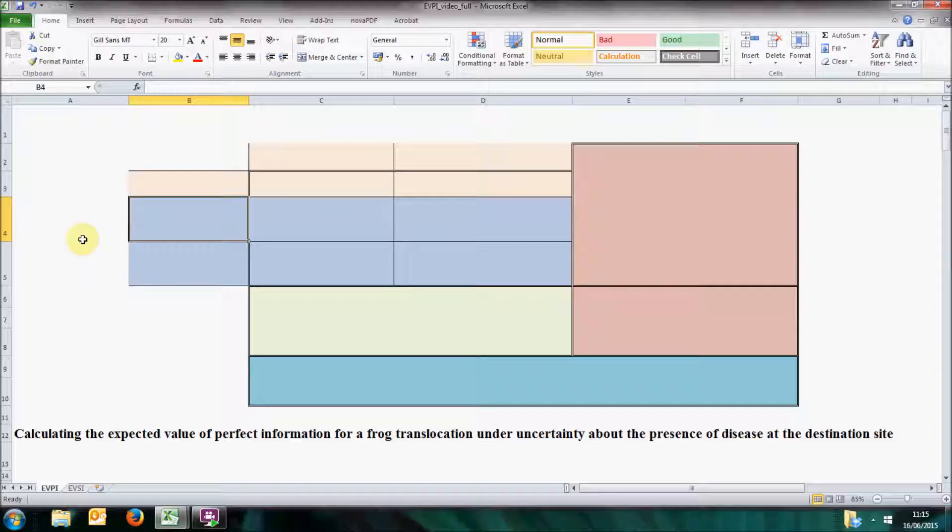In this example we will assume we have a population of frog species within a protected area, and we have the objective of maximizing the number of individuals in the protected area by the end of the next ten years.